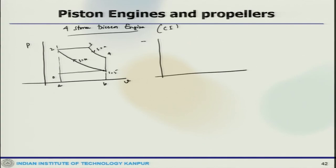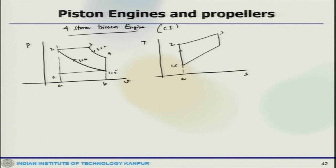Similarly, in the T-S diagram, the cycle goes through states 1, 5, 2, 3, 4, with a P-constant process and a V-constant process. Different processes can be defined for this cycle.